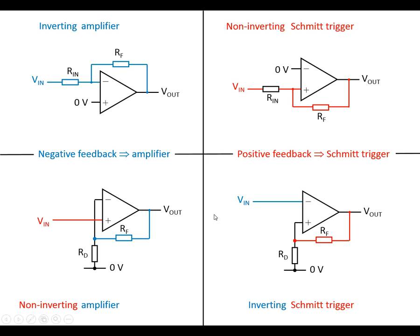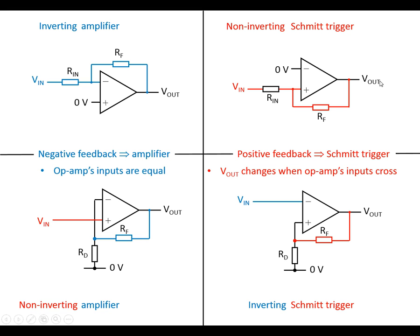There are a couple of rules here. With negative feedback, the op-amp's inputs are going to be equal — that's what the negative feedback does. With positive feedback, V-out is going to change when the op-amp's inputs cross, so when the voltage at that point crosses either side of 0 volts, that's what's going to cause V-out to change. We're going to look at three circuits in detail now.